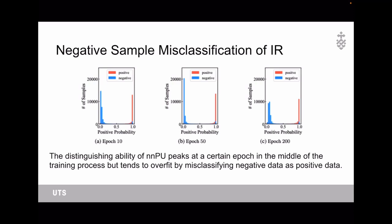However, as the training proceeds, the positive probabilities of most negative samples are increasing, and some of them get surprisingly high positive probabilities, being wrongly classified as positive samples. We can conclude that the distinguishing ability of NNPU peaks at a certain epoch in the middle of the training process, but tends to overfit by misclassifying negative data as positive data, which we define as negative sample misclassification of importance reweighting method.